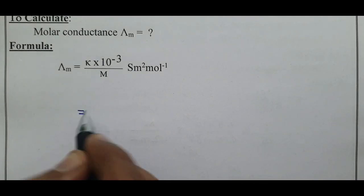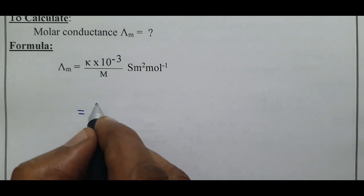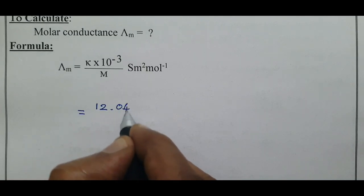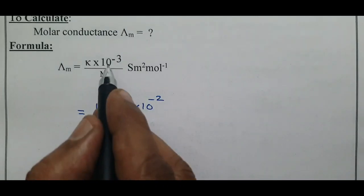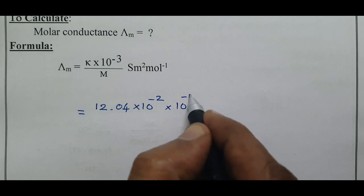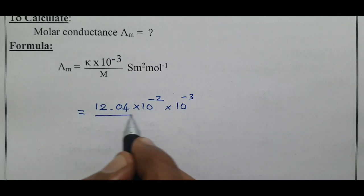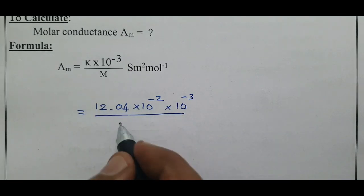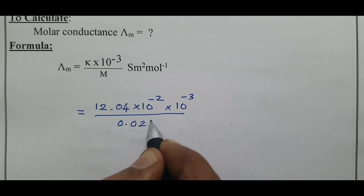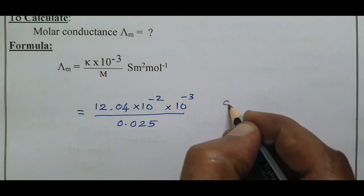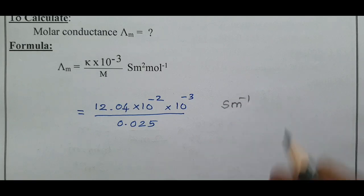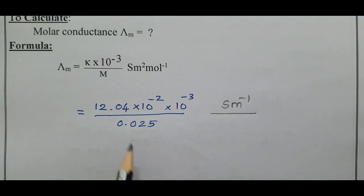Substituting the values: kappa is 12.04 × 10⁻² × 10⁻³, divided by molarity 0.025. For the units, kappa has units of S·m⁻¹, and molarity is given in mol·L⁻¹.